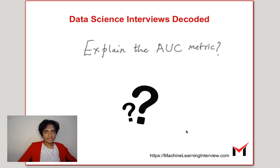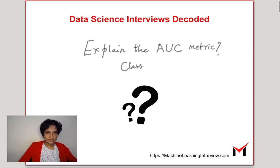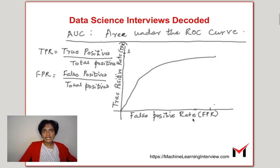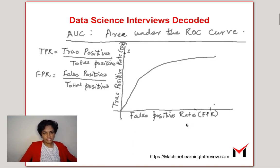AUC is a popular classification metric and stands for area under the ROC curve. It is a plot of the true positive rate against the false positive rate of a classifier, and it is applicable for classifiers that give outputs as the probabilities of success.